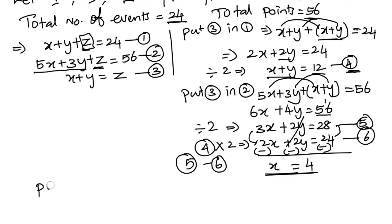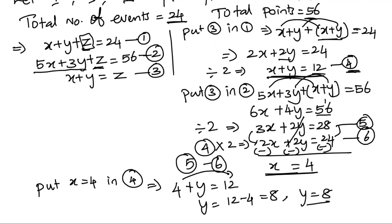Taking equation number 4, put x equals 4. 4y equals 12. Y equals 12 minus 4 which is 8. So y equals 8. That was second place secured.